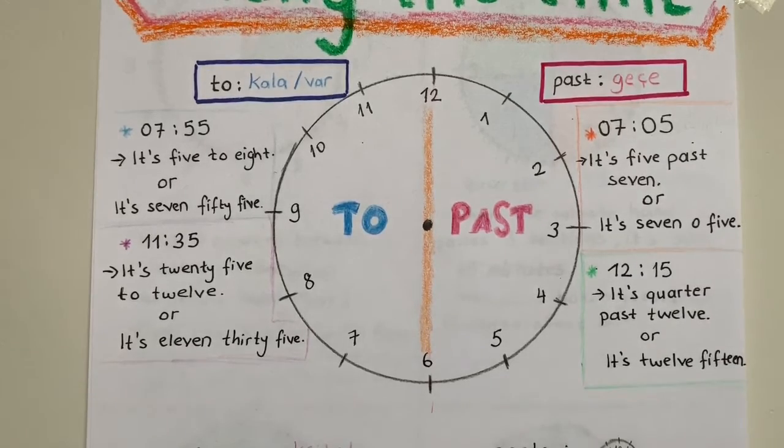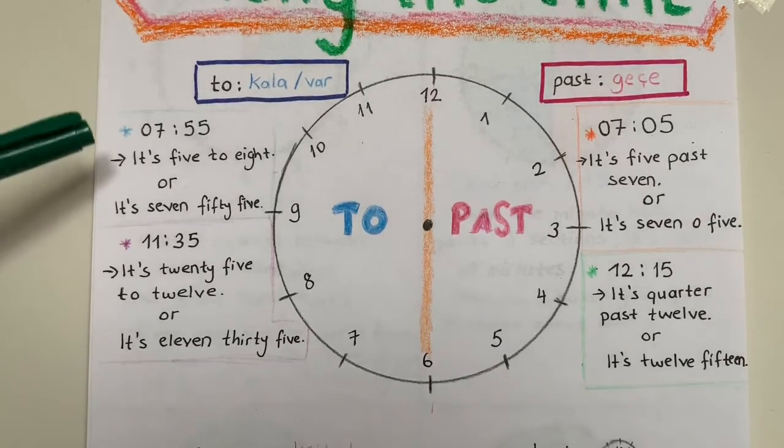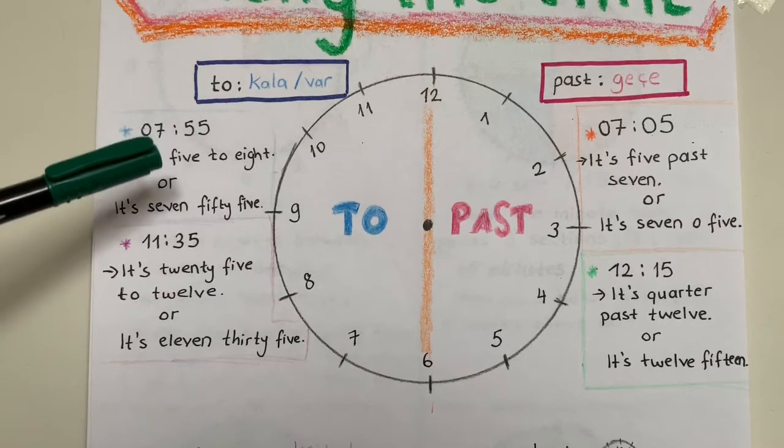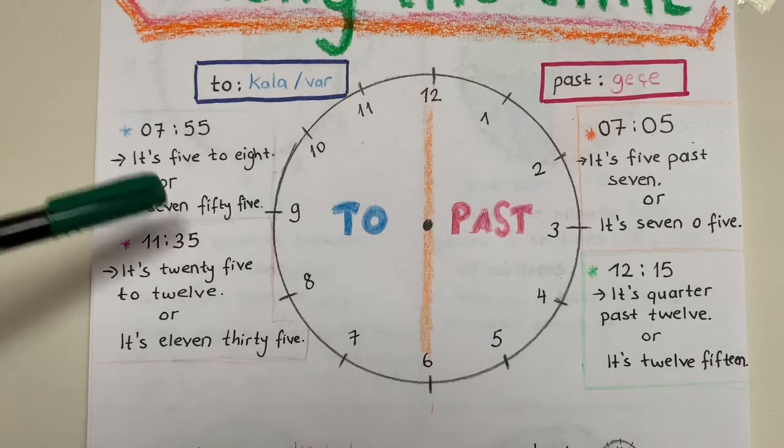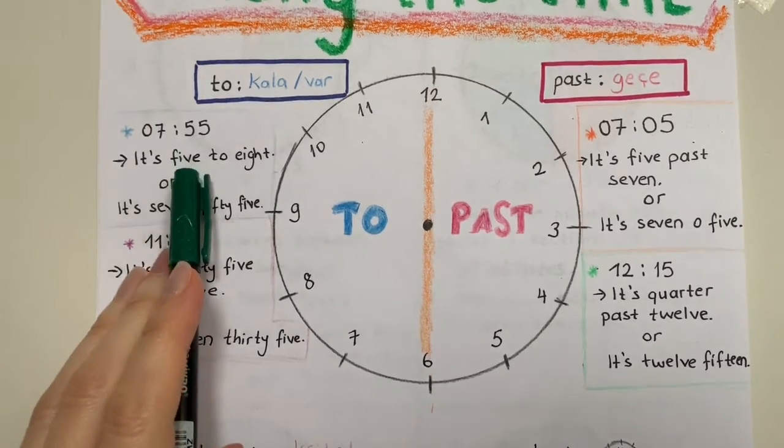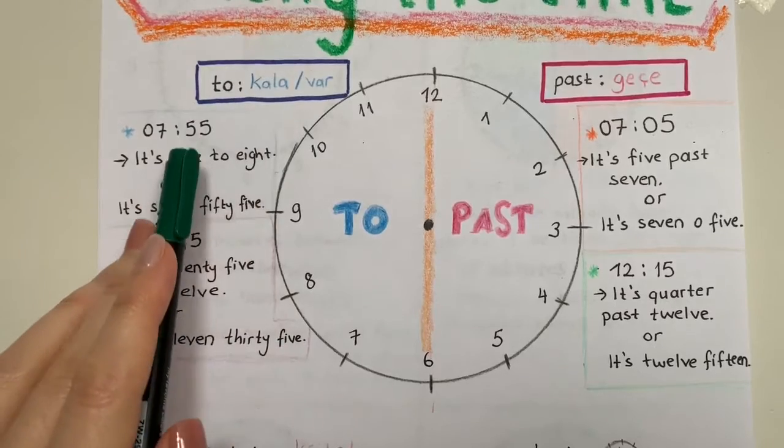It is five to eight, or it is seven fifty-five. Ne yaptım? Bu sefer kaç dakika kaldığını söyledim önce.